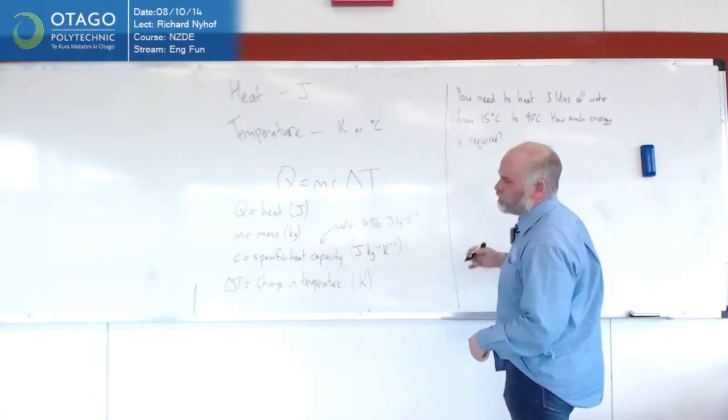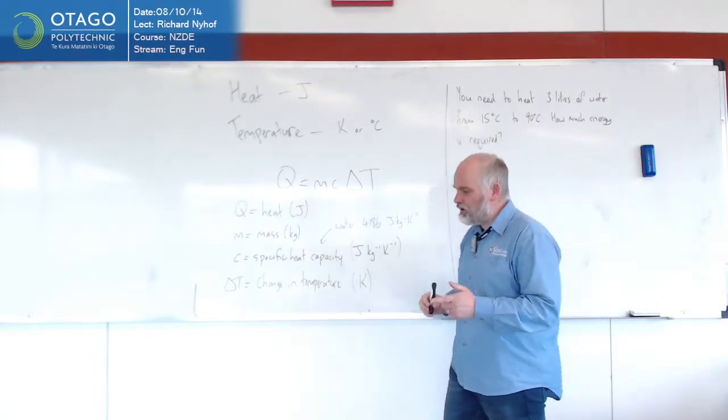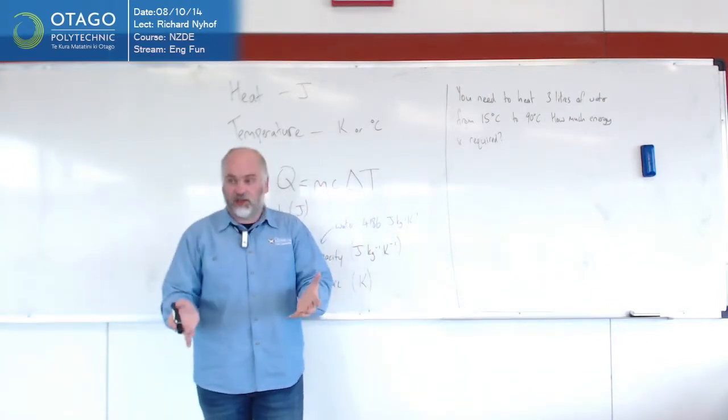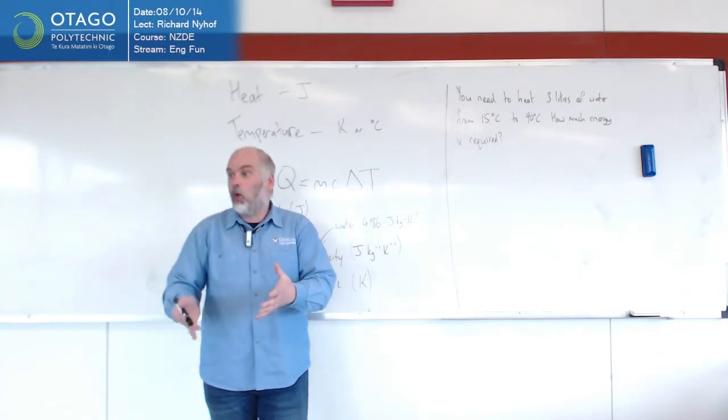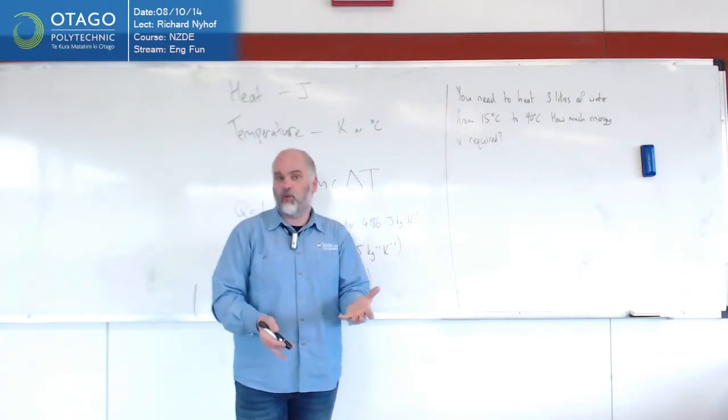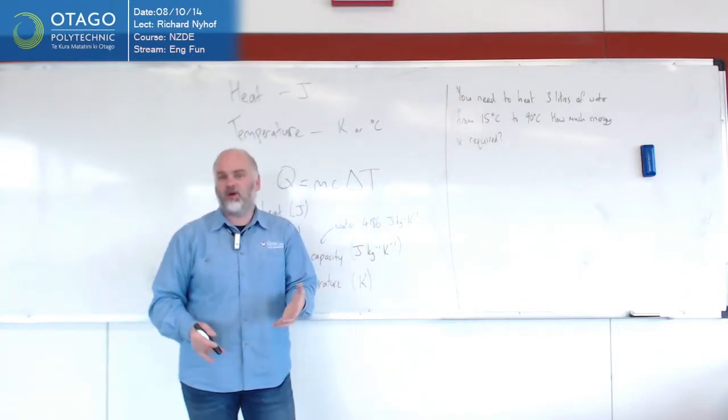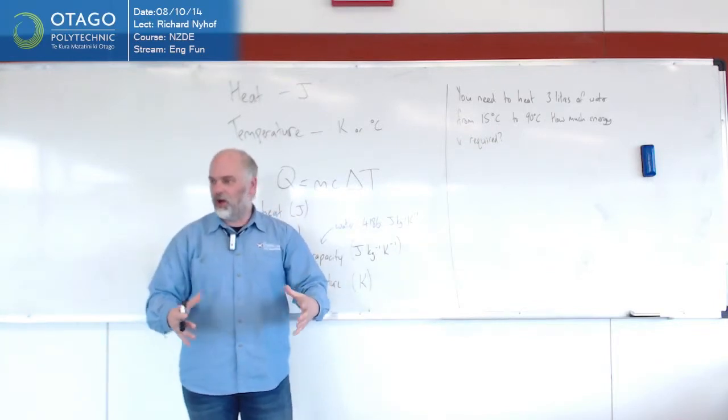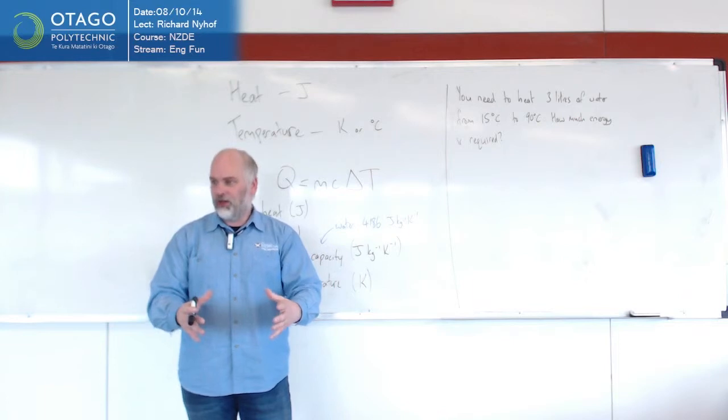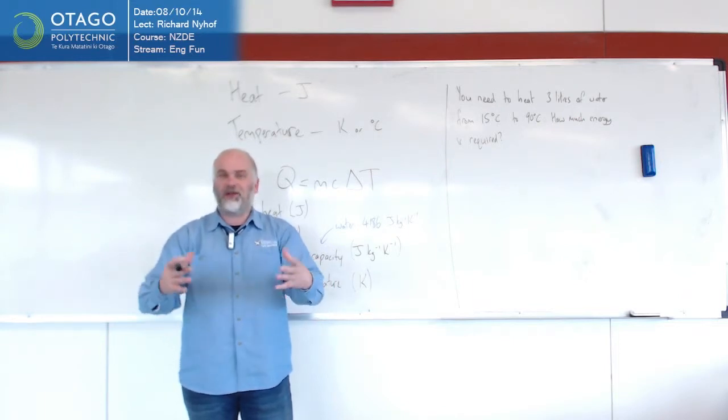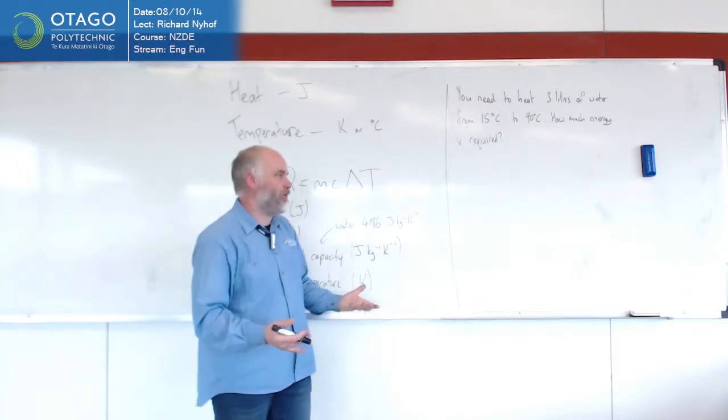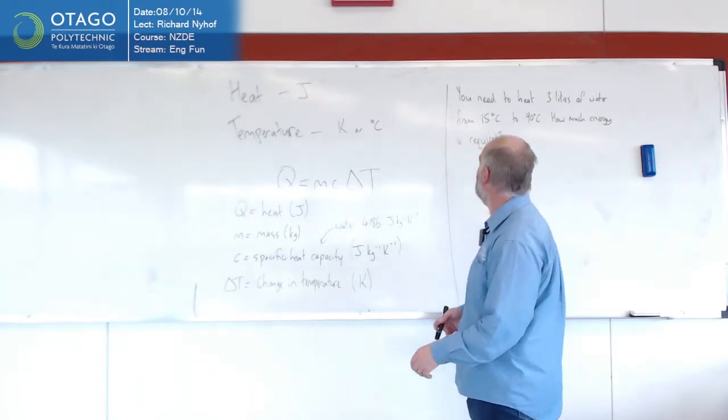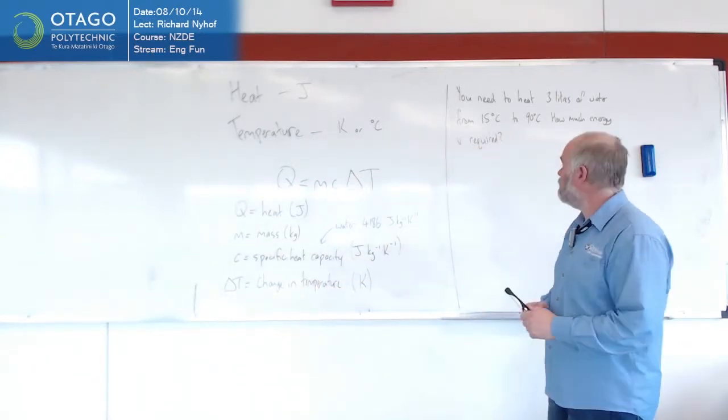We're making all sorts of assumptions here. We're assuming it's 100% efficient, so if I have 10 kilojoules available, all of those are going to end up in the water, which is always a lie. You always lose some because you heat your kettle up and you know if you touch the outside it's hot. Some of the heat's getting out into the environment, so it's not perfectly insulated, but we'll assume that for the moment.